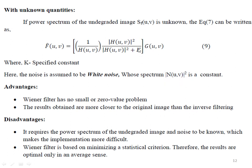Then, replacing the ratio with constant K, the simplified Wiener filter equation becomes: F̂(u,v) = [1/H(u,v)] · [|H(u,v)|² / (|H(u,v)|² + K)] · G(u,v). By tuning the value of K, we can get a better result in image restoration using Wiener filtering.